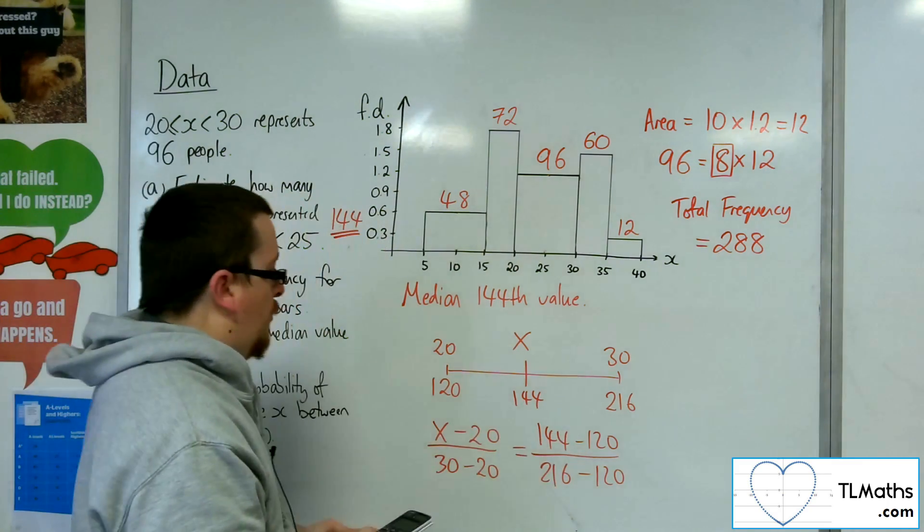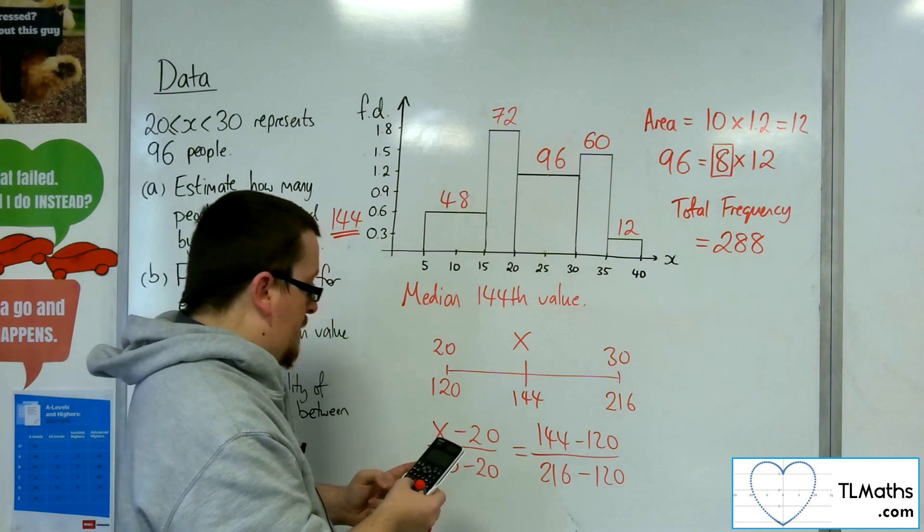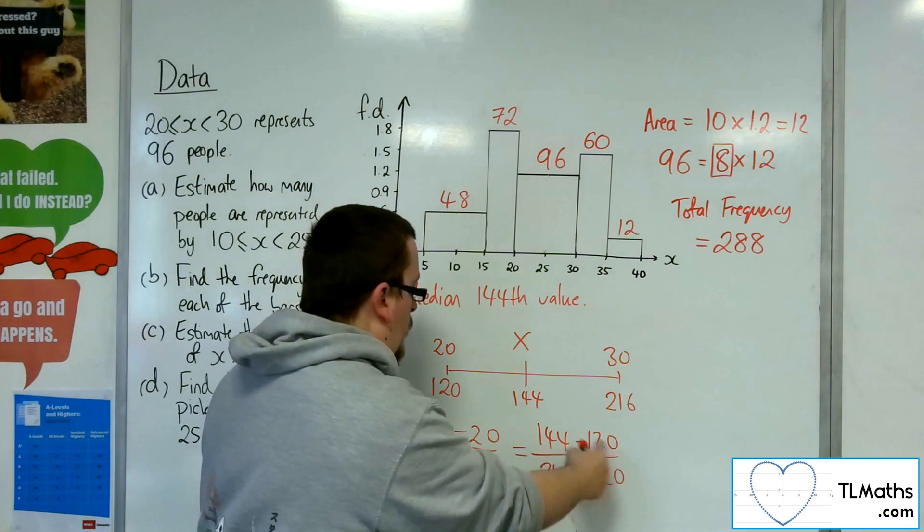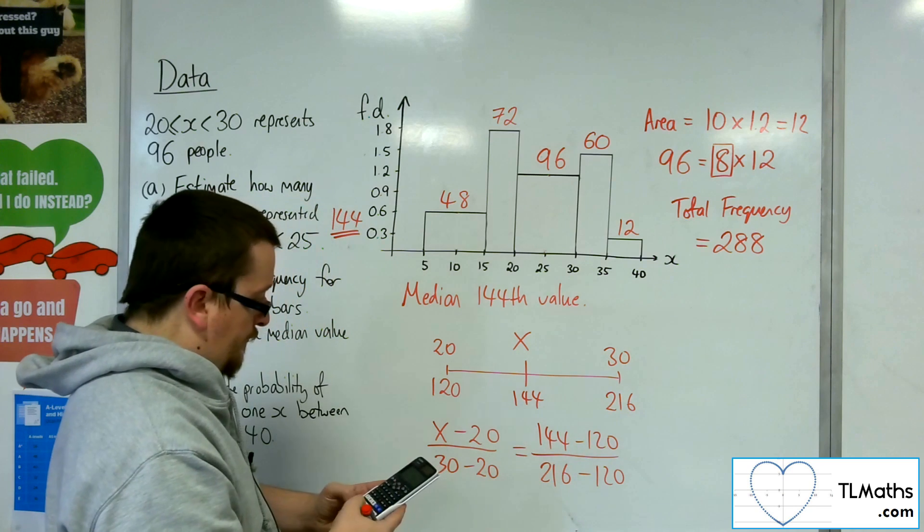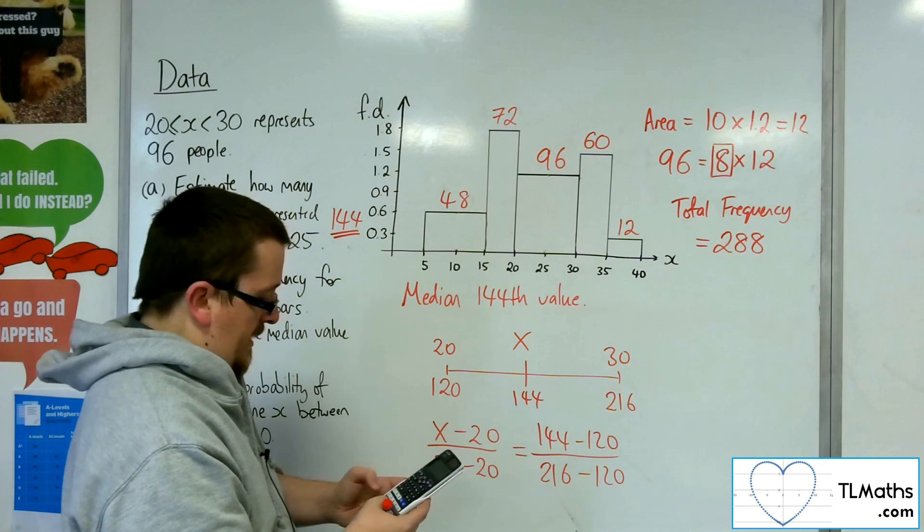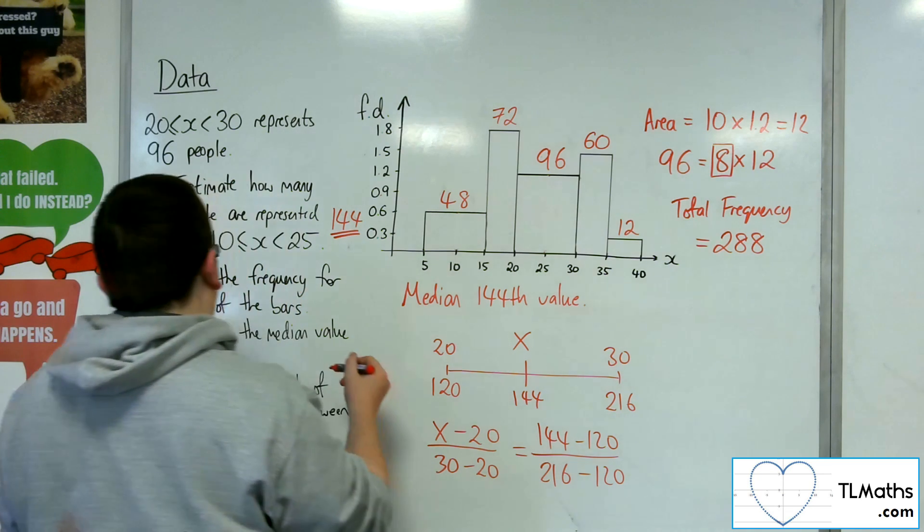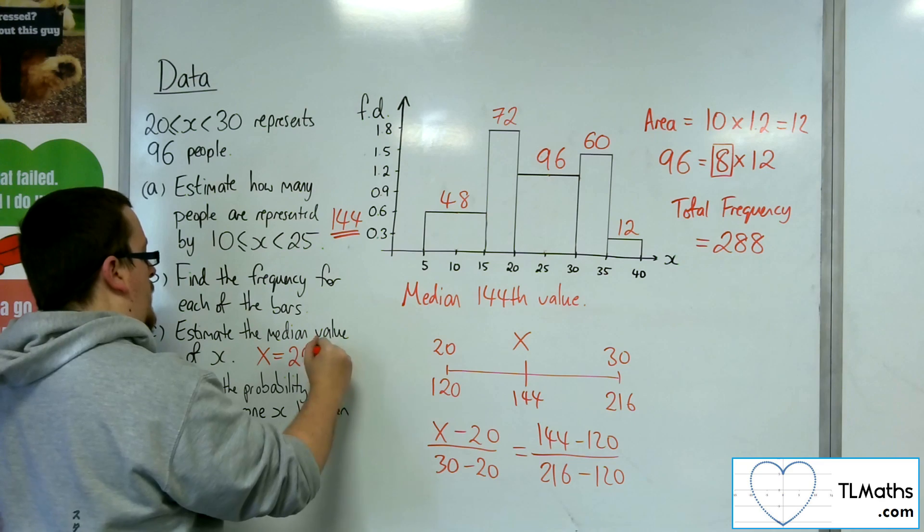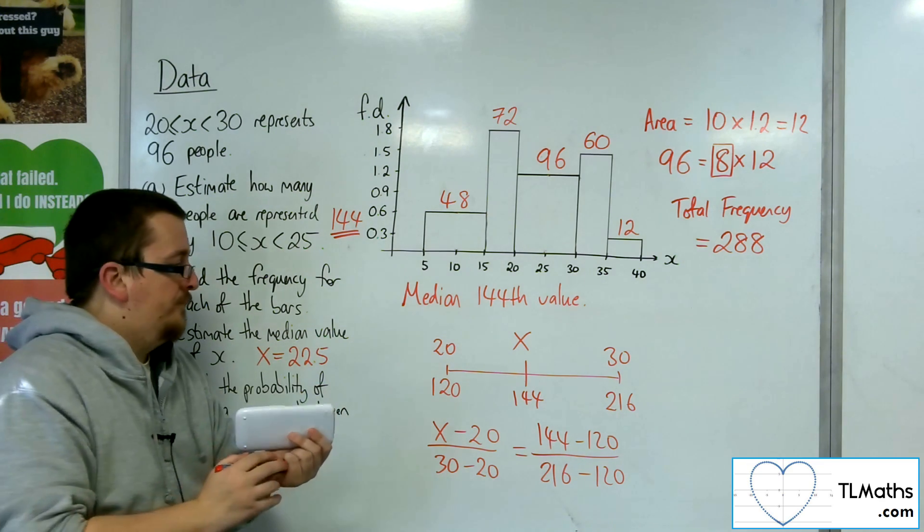So 144 take away 120, so 24 divided by 216 take away 120. So that's a quarter, times that by 10, and then add the 20. And that gets me 22.5. So 22.5 would be the estimate for the median value.